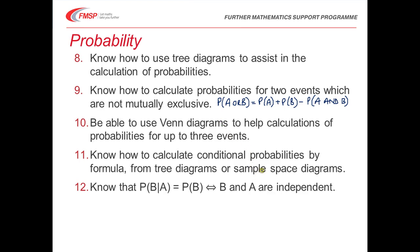You need to be able to deal with conditional probabilities, both from the formula — which we'll look at in a minute — and from tree diagrams and sample space diagrams. And you need to know that the probability of B given A equals the probability of B if and only if B and A are independent. We'll look at that in a little bit more detail in a minute.